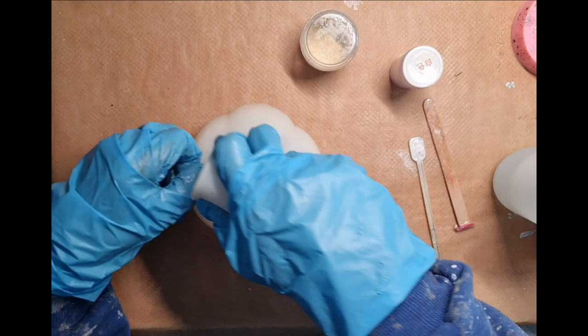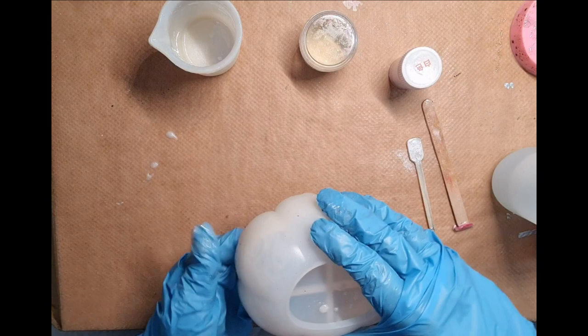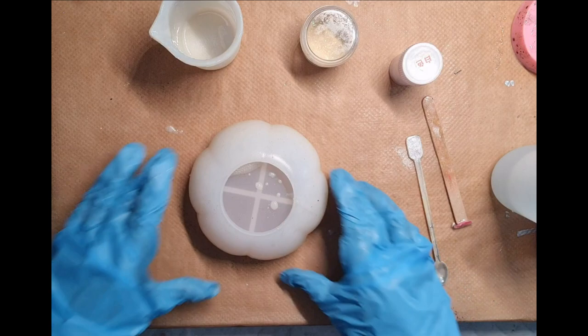Just wipe it down my thumb. Try and get all the bubbles out. Make sure there's no bubbles down the bottom. Give it a good old squish around. Hopefully that's all the bubbles gone.